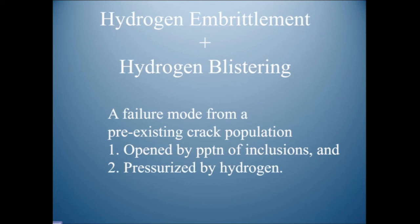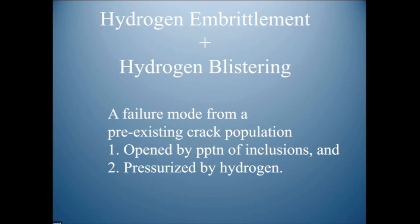Hydrogen embrittlement is slightly more complicated. We have pre-existing cracks almost like a lattice throughout the metal. If we do a sensitizing treatment in which carbides precipitate into our steels, they precipitate on the bifilms, prize them open, and start the process by which bifilms are opened by internal pressure. Hydrogen then diffuses in, especially along bifilms and into the open fish-eye areas distributed throughout the steel.